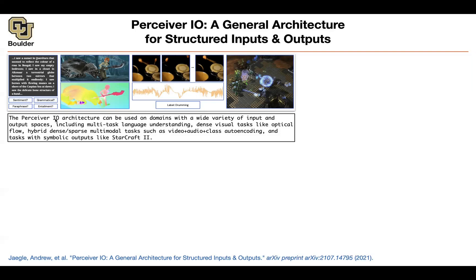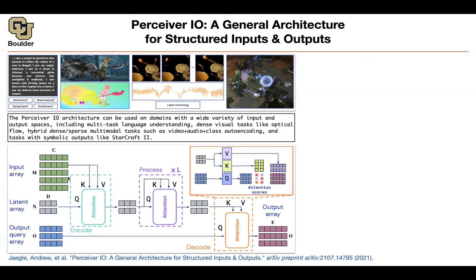Perceiver IO is going to be based on the attention mechanism. Regardless of what type of data you have, you can put it in a matrix. For instance, if you have text, one dimension is your sequence length and the other is your embedding dimension. If you have pixels, one dimension is all of your pixels flattened, and the other represents red, green, blue channels.